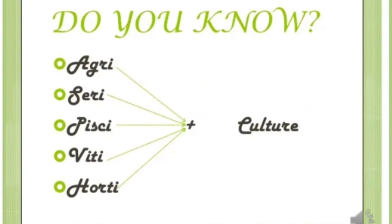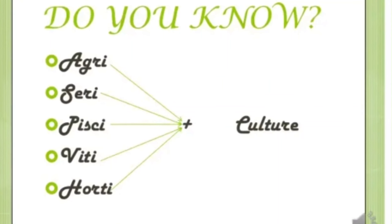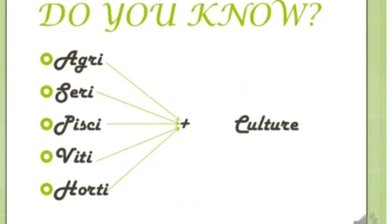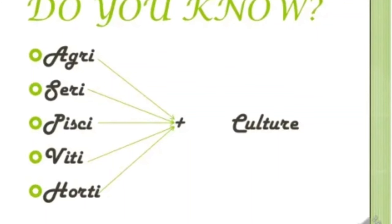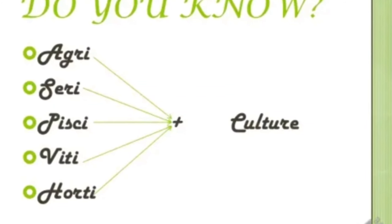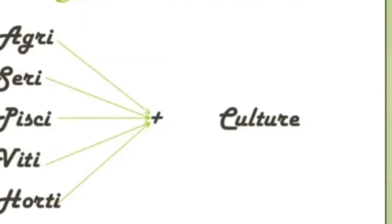We have so many kinds of agricultural activities. Apart from agriculture, what do we do? There is sericulture — do you know what sericulture is? There is horticulture, viticulture, pisciculture — all of this we are going to discuss in detail.